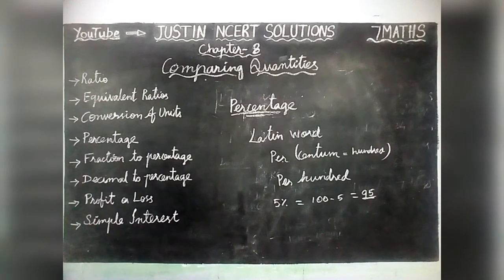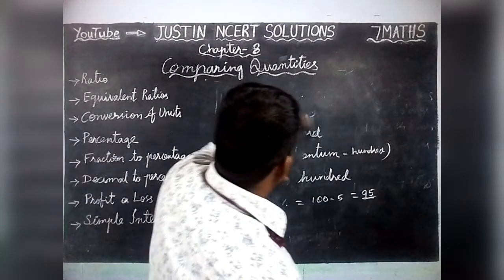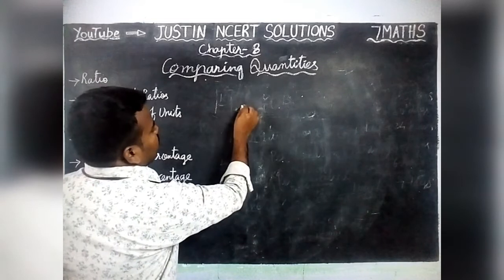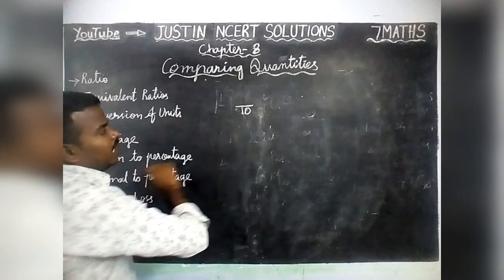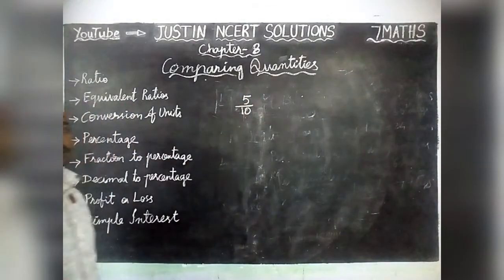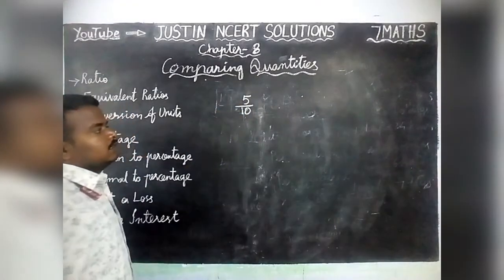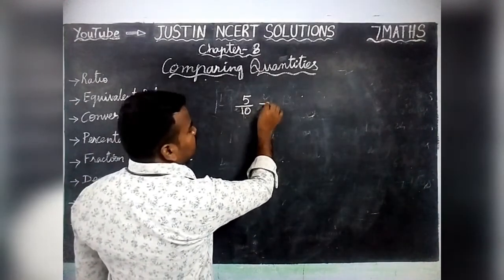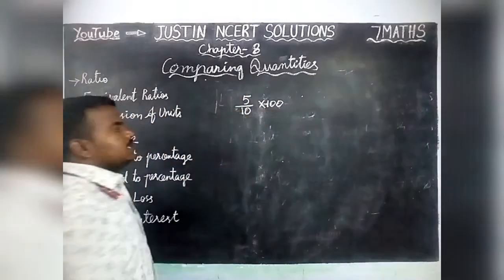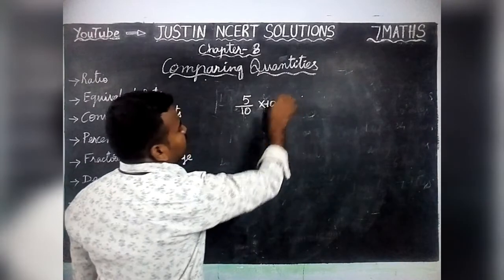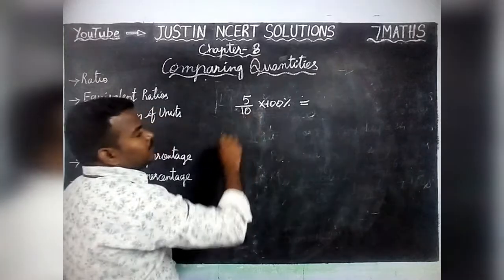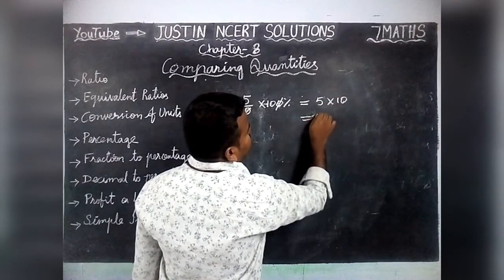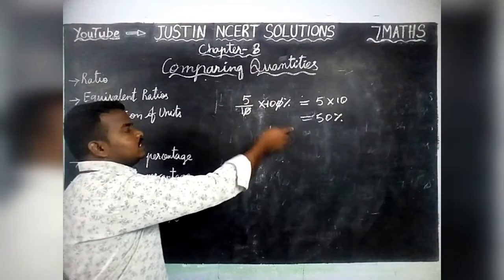Next, we are going to see Fractions to Percentage — how to convert Fractions into Percentage. For example, I have 10 pencils totally and I am going to give 5 pencils to my friend. That is 5 divided by 10 in fraction form. To find the percentage, we multiply by 100. So 5 by 10 into 100% — one zero gets cancelled — 5 into 10 equals 50%. So I have given 50% of pencils to my friend.